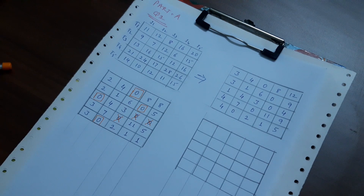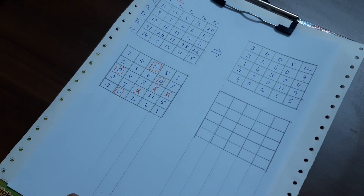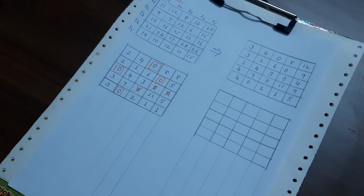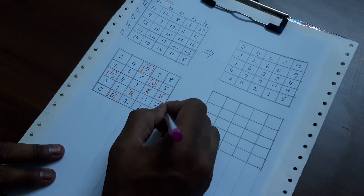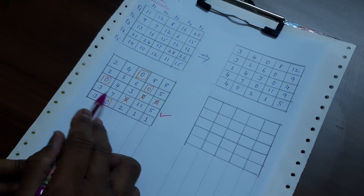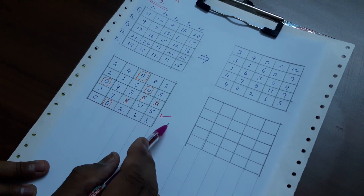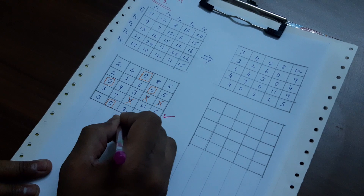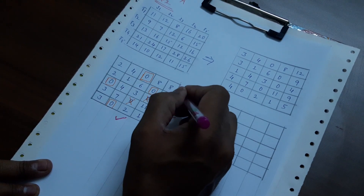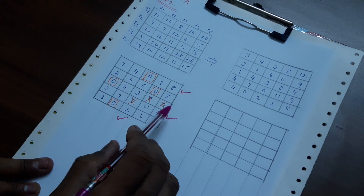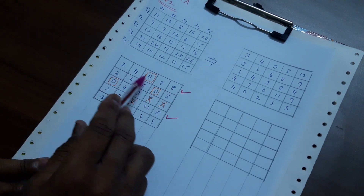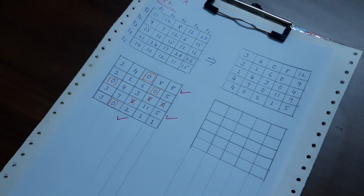We now do the ticking procedure. We tick a row where assignment is not made — so the fourth row is ticked. In this ticked row, we check whether we have any crossed zeros, which is in the third column. In that ticked column, we check whether there is an assignment made, which is in the first row — so we tick that row. In this newly ticked row, we check for crossed zeros and find none, so the ticking procedure is over.